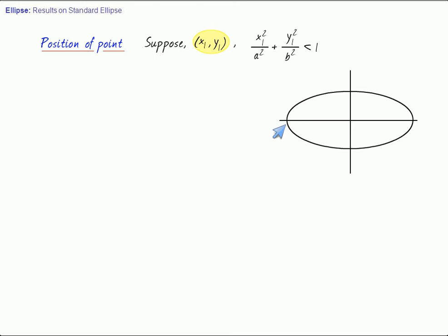Suppose x1, y1 is a point here. Produce the ordinate of x1, y1 to a point x1, y1 dash on actual ellipse. By figure, y1 dash is bigger than y1. This will give us y1 dash square is greater than y1 square. y1 dash square upon b square greater than y1 square upon b square. Adding x1 square upon a square on both sides. So x1 square upon a square plus y1 dash square upon b square is bigger than x1 square upon a square plus y1 square upon b square.